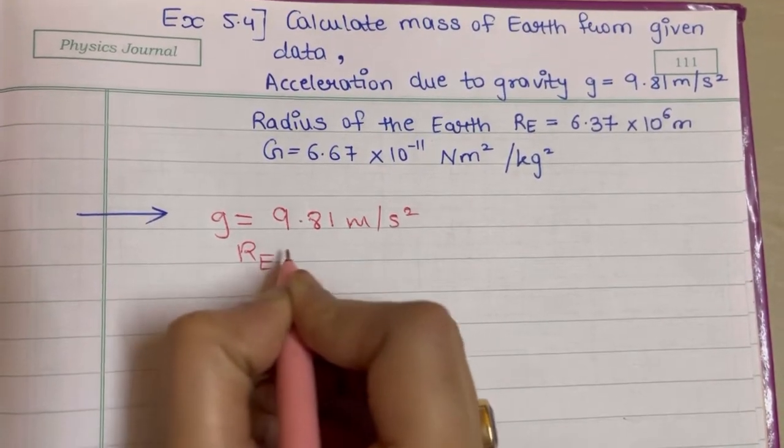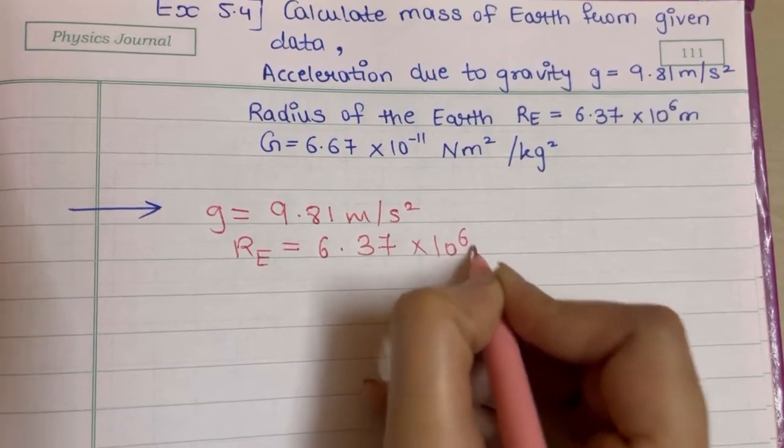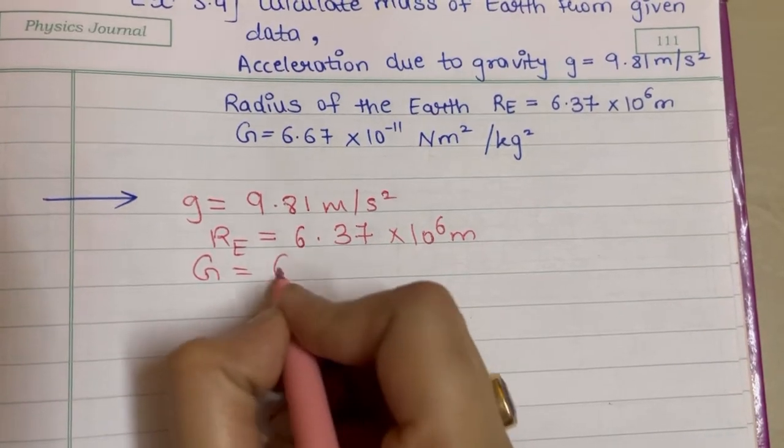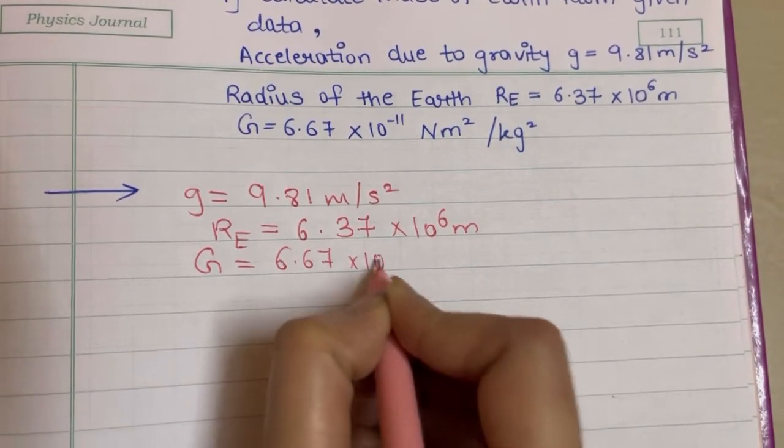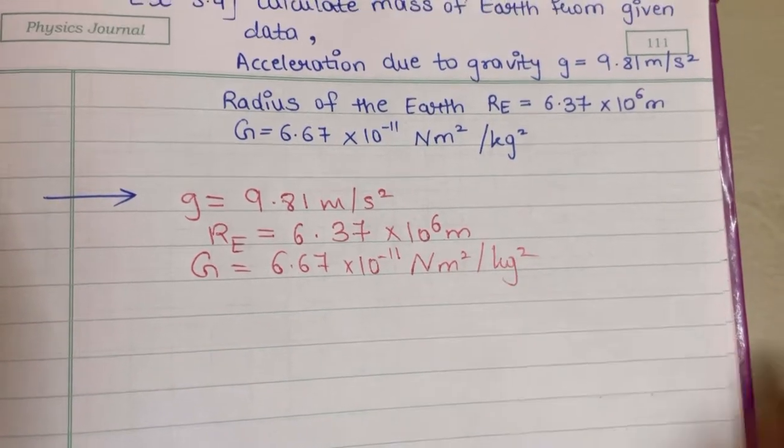Radius of the Earth, that is Re, is given to us 6.37 into 10 raised to 6 meter. Universal gravitational constant, that is G, is given to us 6.67 into 10 raised to minus 11 newton meter square per kilogram square.